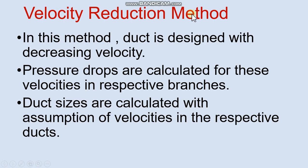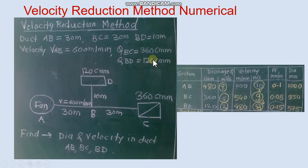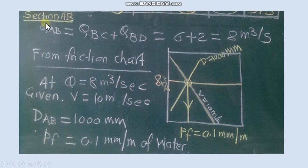Second method is velocity reduction method where duct is designed with decreasing velocity. So here we will take same problem statement. In section AB we know discharge. From friction chart velocity and discharge we get diameter and PF.